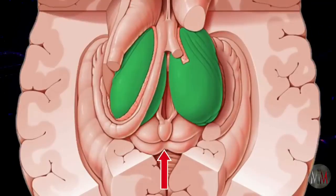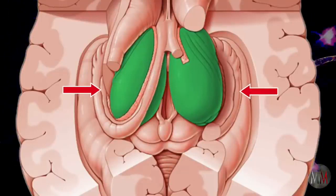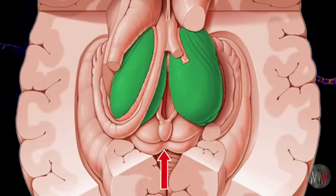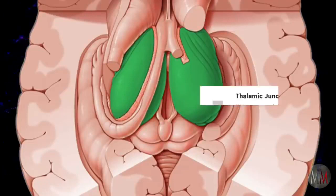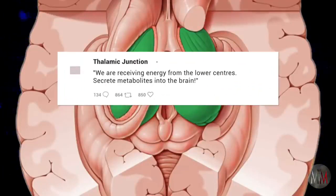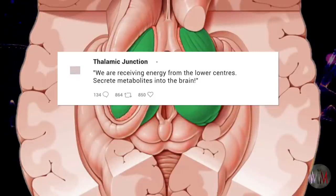Right between each thalamus located in the midbrain sits the tiny pinecone-shaped pineal gland, facing the back of the brain. As a side note, there are two individual thalami in the midbrain, one on each side, which feed each hemisphere in the neocortex. The pineal gland sits right between them. When the energy reaches each thalamic junction, these thalami send a message directly to the pineal gland to secrete its metabolites into the brain.